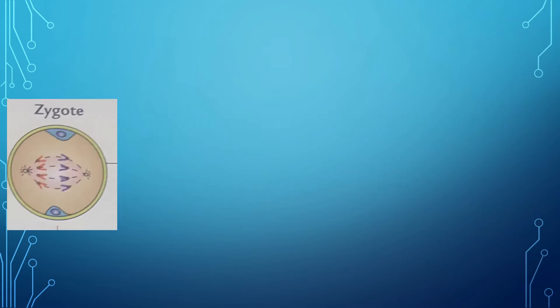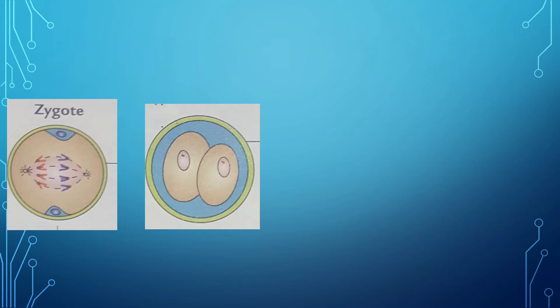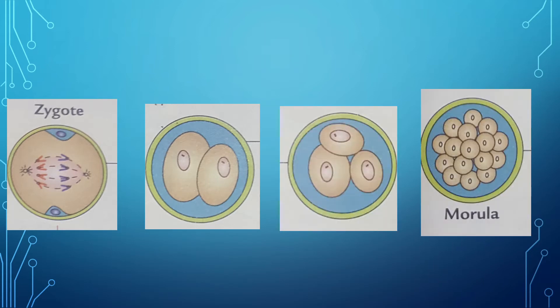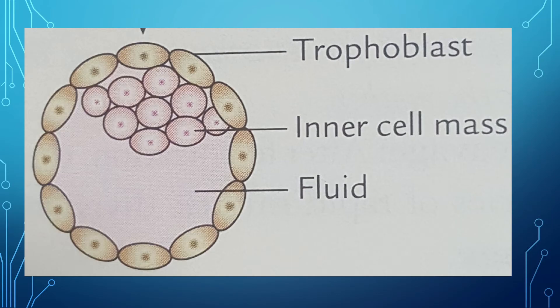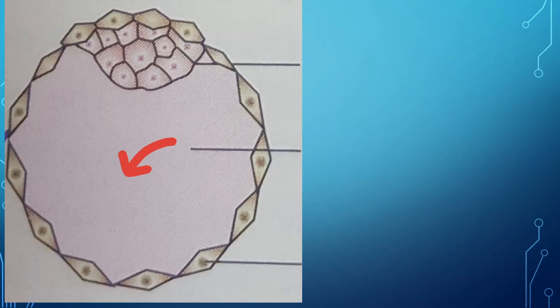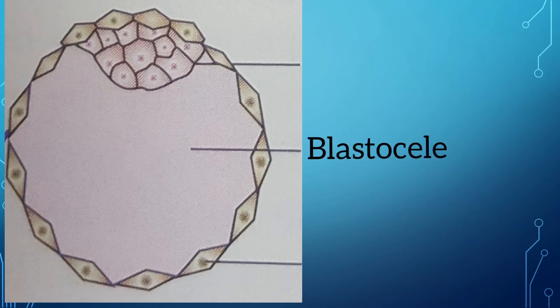Coming into our topic, following fertilization there is formation of zygote which undergoes a series of divisions resulting in the formation of morula, which is a 16 cell stage. This morula, after entering into the uterine cavity, takes up the endometrial fluid and forms a cavity between the intercellular spaces of morula. This cavity is called blastocele.